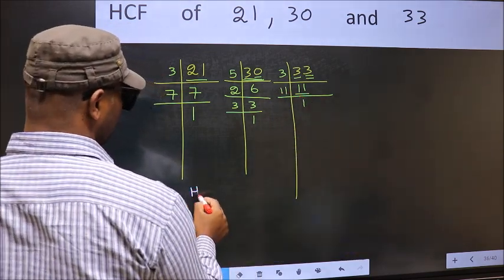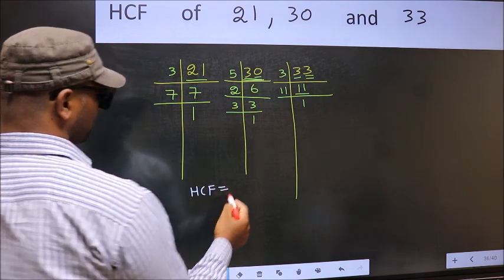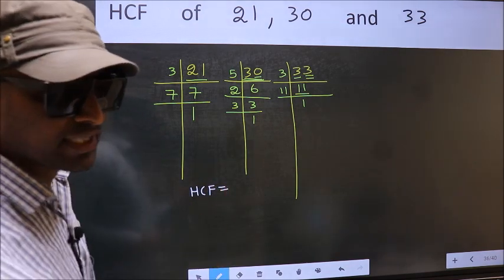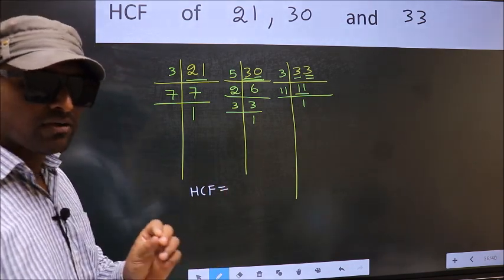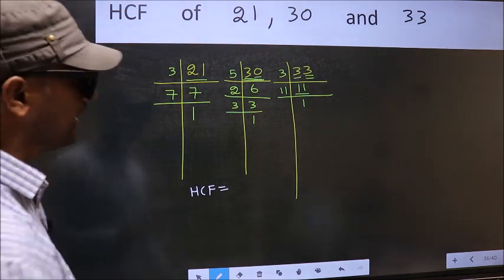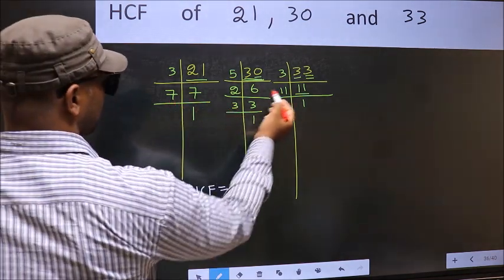Therefore, our HCF is the product of numbers which are present in all three factorizations.